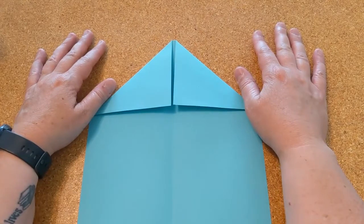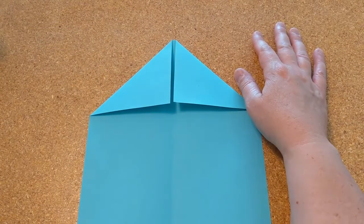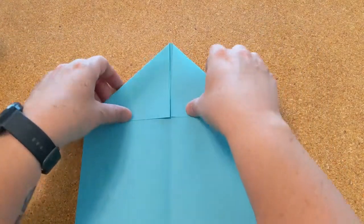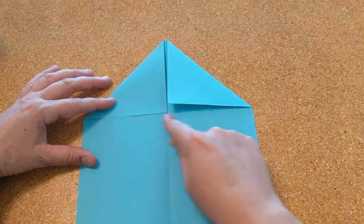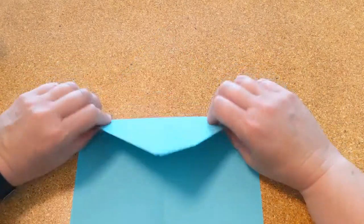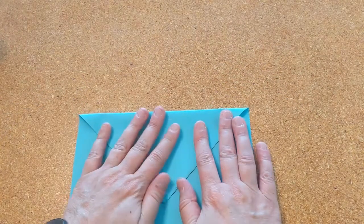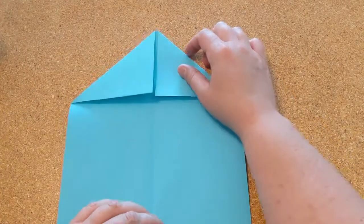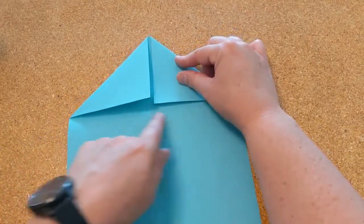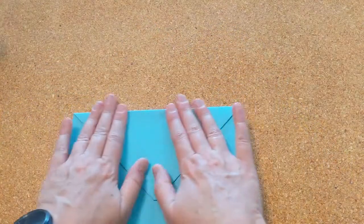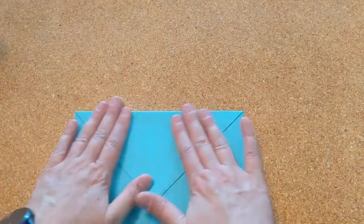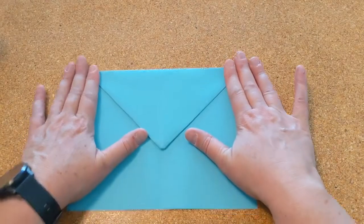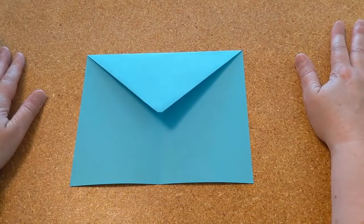Next you're going to fold the point of the plane down creating a fold along the bottom of your triangle, like this. Your fold is right here along the bottom of that triangle. It kind of looks like an envelope.